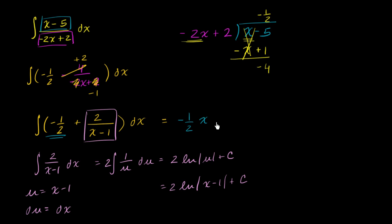That's what we're going to have right over here: plus 2 times the natural log of the absolute value of x minus 1 plus C. The plus C doesn't just come from this one.